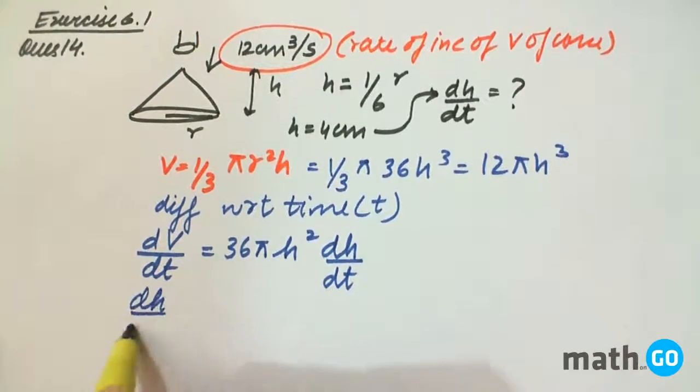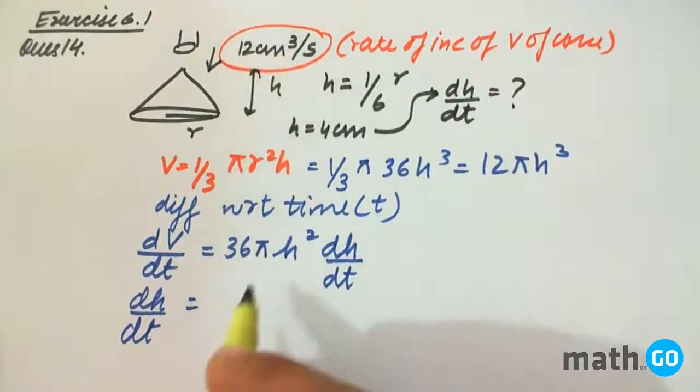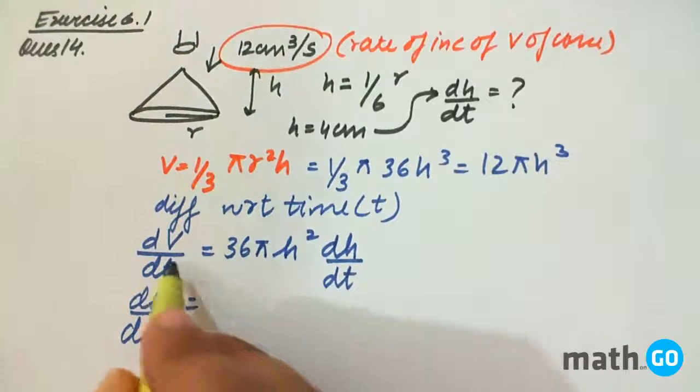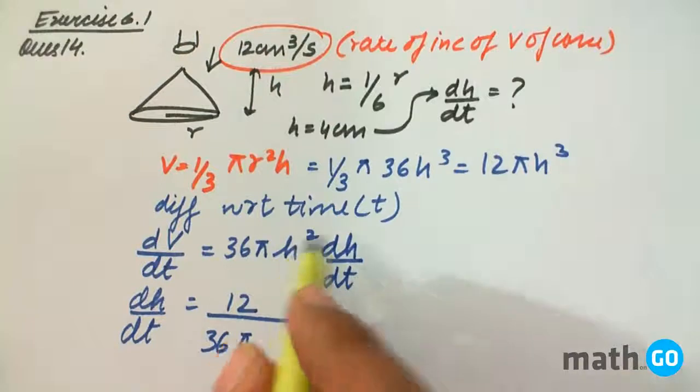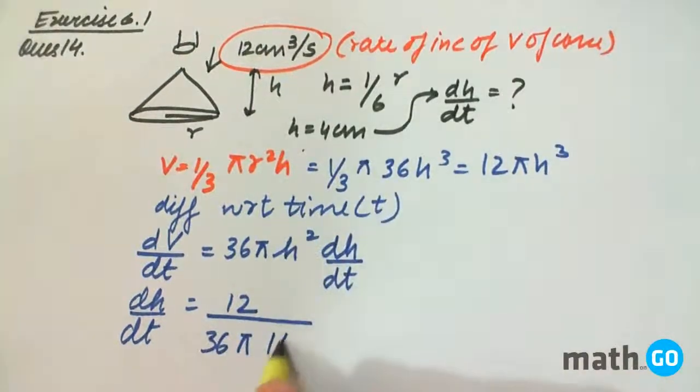So dh by dt is nothing but dV by dt that is 12 upon 36 pi h square and h square is 16.